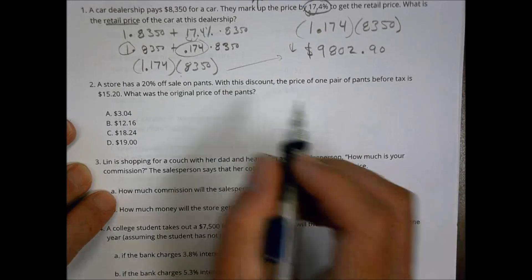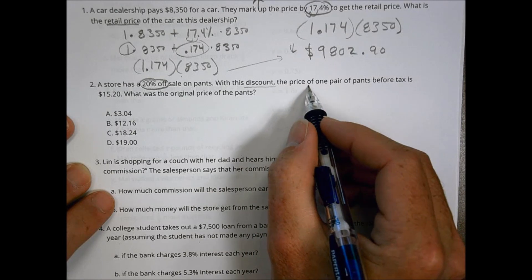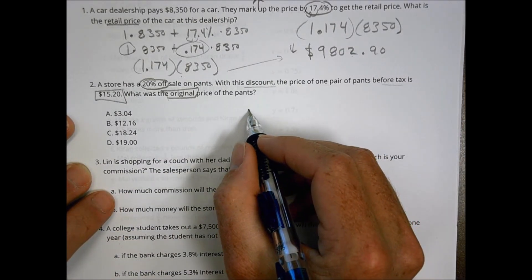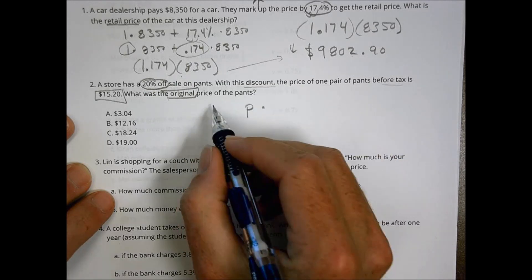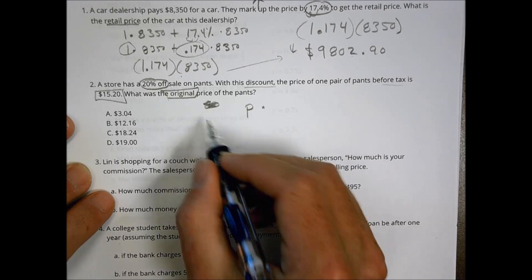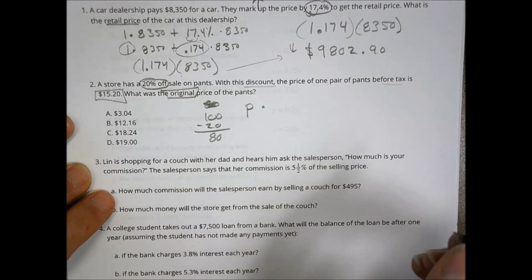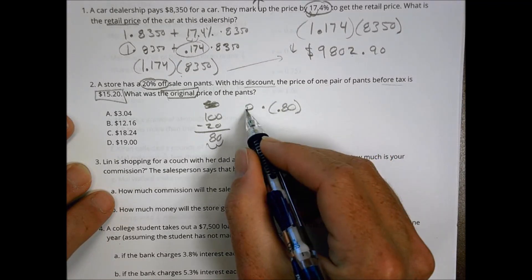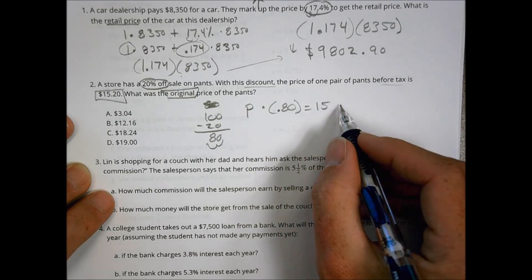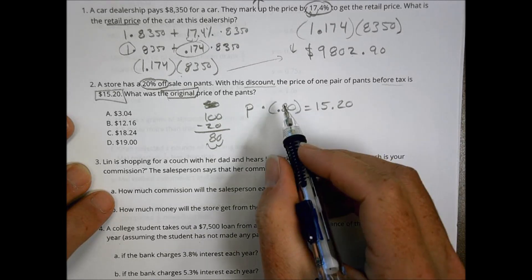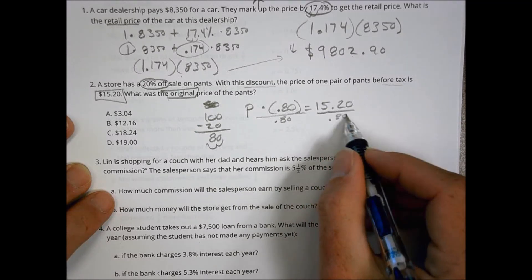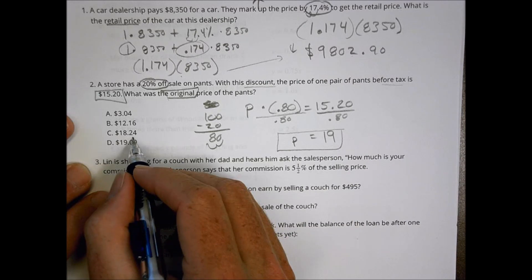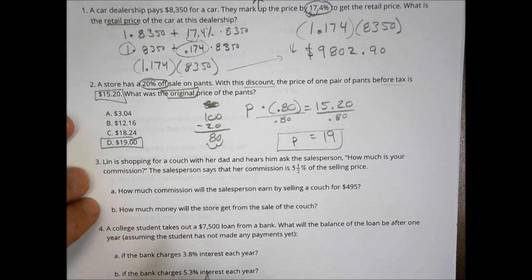Number two, a store has a 20% off sale on pants. With this discount, the price of one pair of pants before tax is $15.20. What was the original price? So think of it like this. We have some pants, we'll call them P, and we're going to multiply by not 80%, but I get a 20% discount. I get 100 minus 20, which means I'm only going to pay 80% of the initial price. Moving that over, I can multiply by .80. So the pants are going to be 80% of the original cost. And in this case here, that sale price is $15.20. So to find the amount the pants were originally, we divide both sides by .80. 15.20 divided by .80 is going to be equal to $19. So the pants initially were a cost of $19 before the 20% discount.